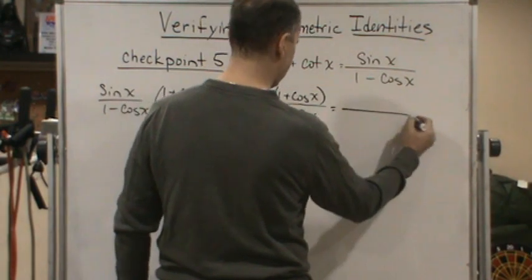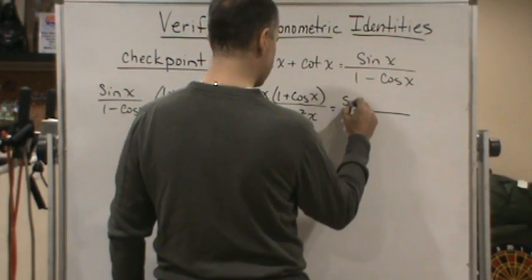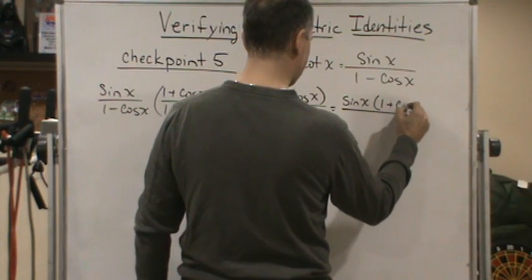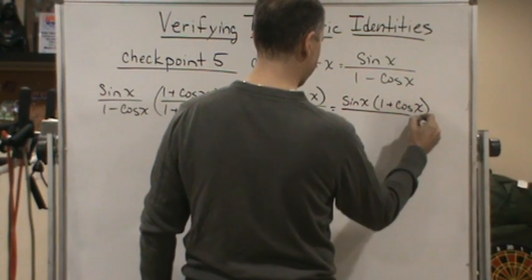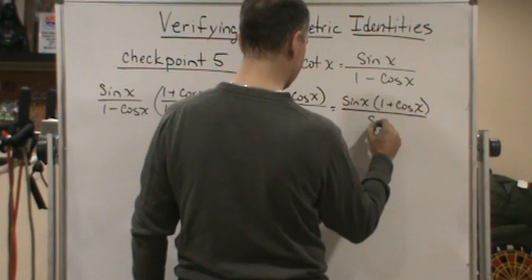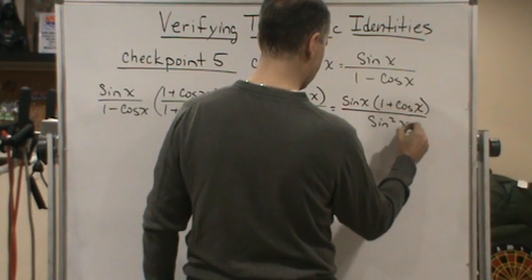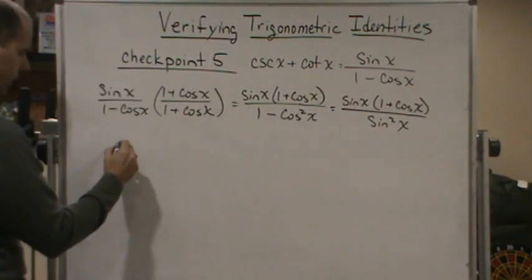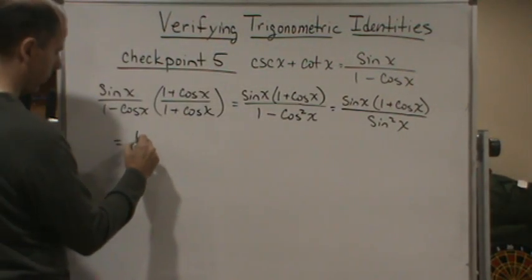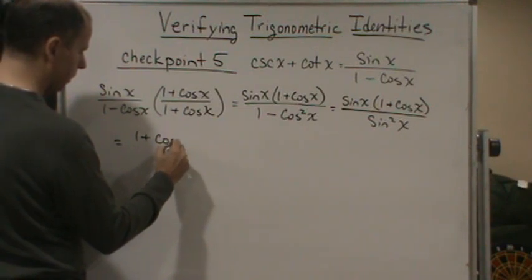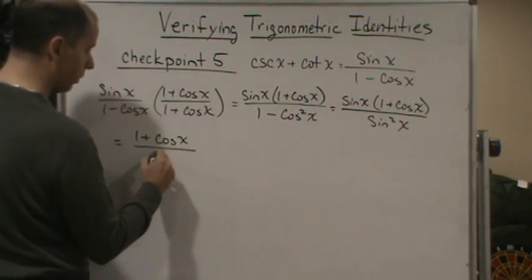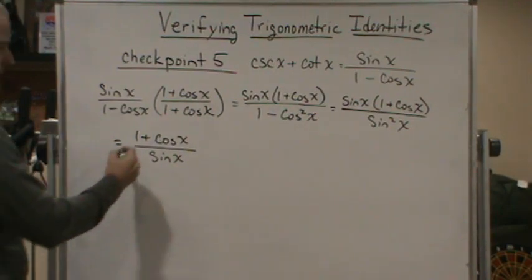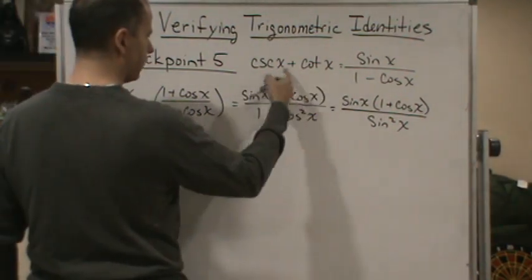So this is going to simplify to sine x times 1 plus cosine x, all over sine squared x. Now I can cancel, right? So this is going to equal 1 plus cosine x all over sine x. Now I can split it up into two fractions.